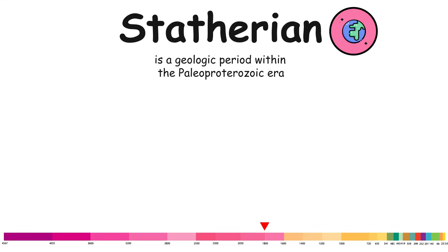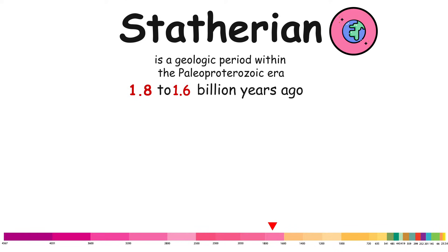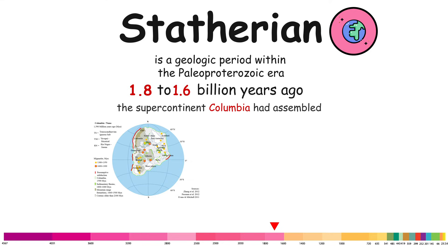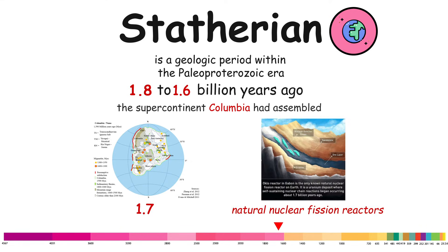Statherian. The Statherian is a geologic period within the Paleoproterozoic era, spanning approximately from 1.8 to 1.6 billion years ago. By the beginning of the Statherian, the supercontinent Columbia had assembled approximately 1.7 billion years ago. A series of natural nuclear fission reactors was operational in what is now Oklo, Gabon.